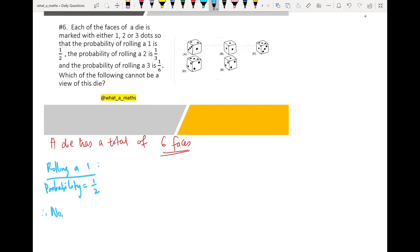Therefore, number of faces with a 1 is equal to six faces multiplied with the probability, that's half. This will give me three faces. So I can have three faces with the number 1.